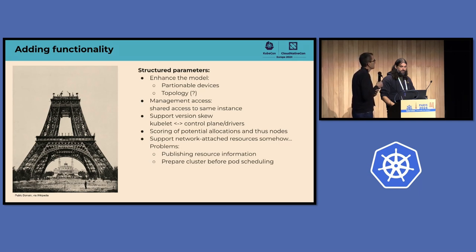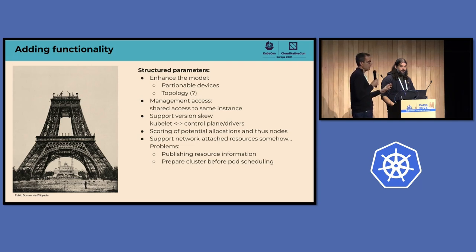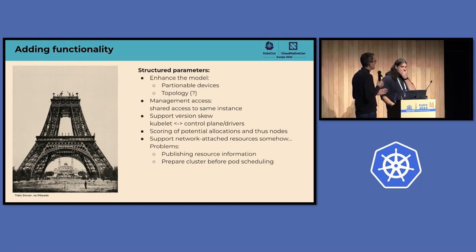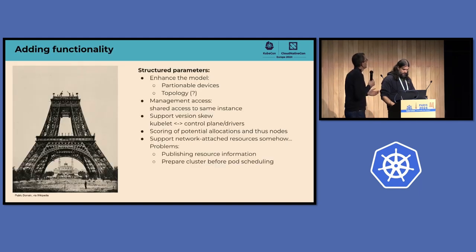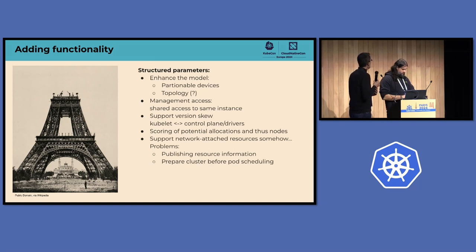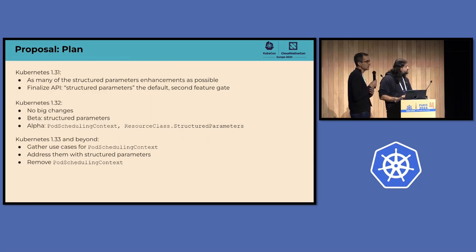There are some other implementation aspects. Version skew between kubelet and the control plane is currently an issue because it needs to pass information in exactly the right version — whenever we change anything in our structured model, we'd need to update kubelet. There are ideas on how to address that. Scoring might also be needed. If we focus on these things, we think that for 1.31 we can have something that's fairly complete and useful.